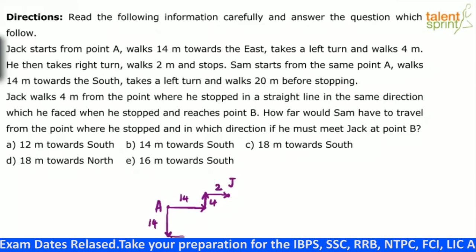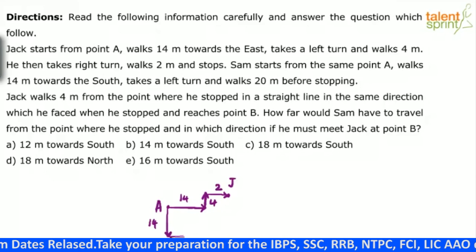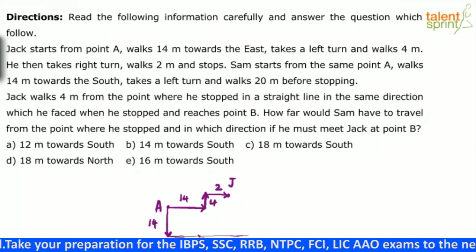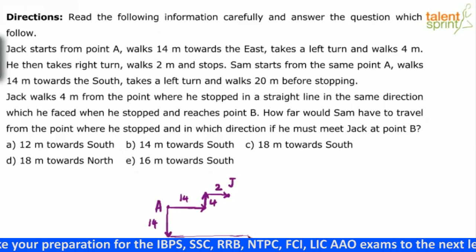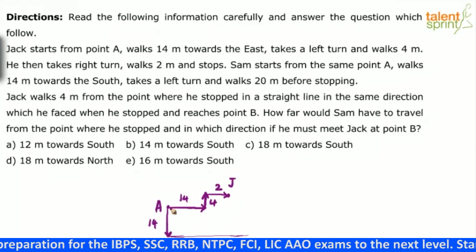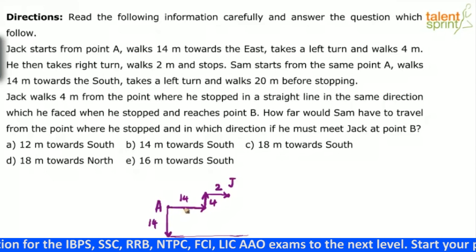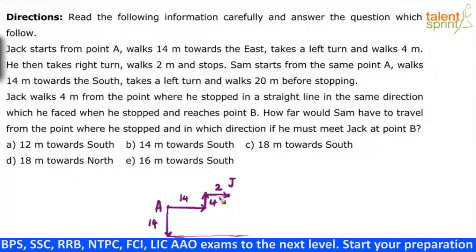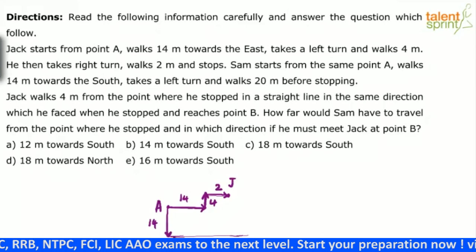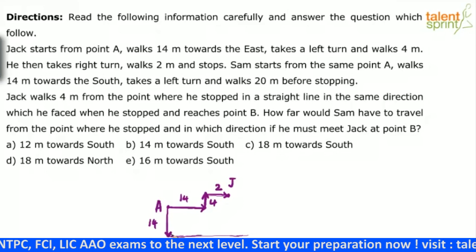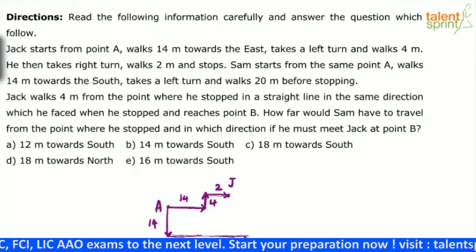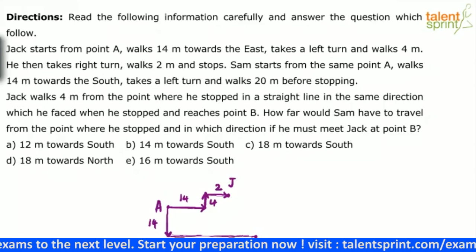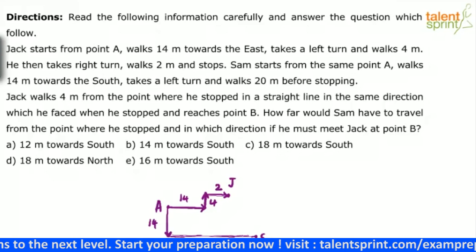He walks 20 meters before stopping. Now understand — 20 meters means what? He will cross Jack's position and move forward. Because if you see the horizontal distance covered by Jack, it was 14 meters and 2 meters — 14 plus 2 is only 16. But Sam has walked 20 meters before stopping. So he will cross 16 and stop after covering 20 meters. So this is Sam's final position.